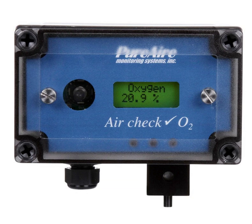Photoionization detectors use a high-photon energy UV lamp to ionize chemicals in the sample gas. If the compound has an ionization energy below that of the lamp photons, an electron will be ejected, and the resulting current is proportional to the concentration of the compound. Common lamp photon energies include 10.0 eV, 10.6 eV and 11.7 eV. The standard 10.6 eV lamp lasts for years, while the 11.7 eV lamp typically lasts only a few months and is used only when no other option is available. A broad range of compounds can be detected at levels ranging from a few ppb to several thousand ppm.